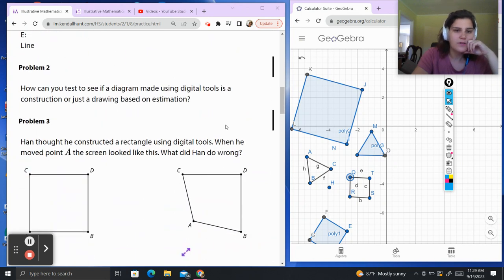Problem 2. How can you test to see if a diagram made using digital tools is a construction or just a drawing based on estimation? I've got a bunch of shapes I drew over here. We're going to figure out which ones were constructed and which were based on estimation. If I touch this polygon and move it, notice he stays the same size consistently. This is based on a construction.